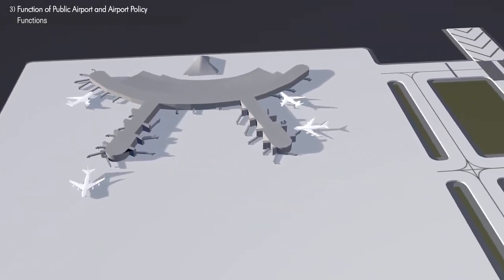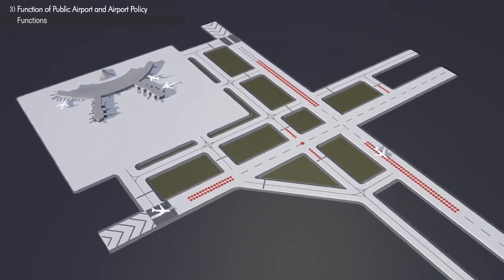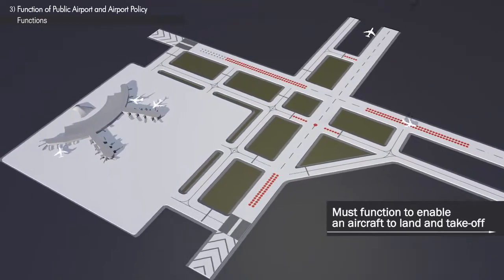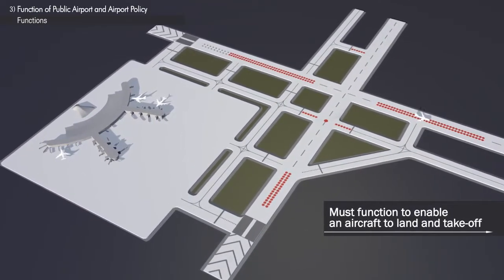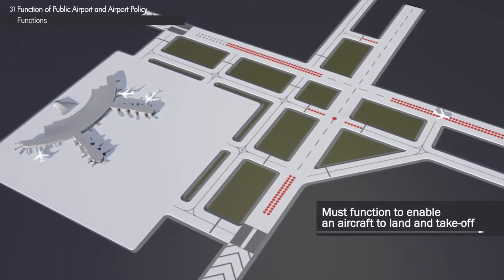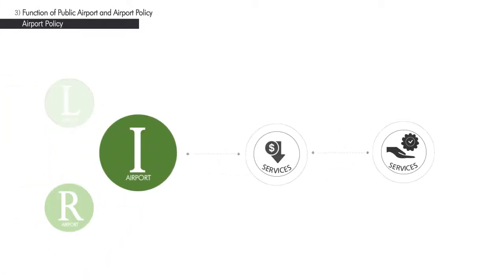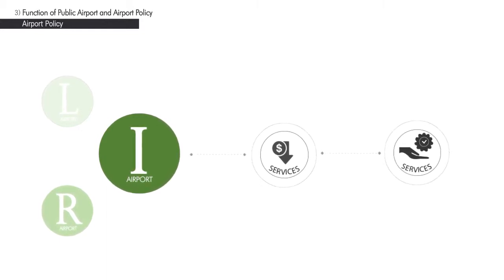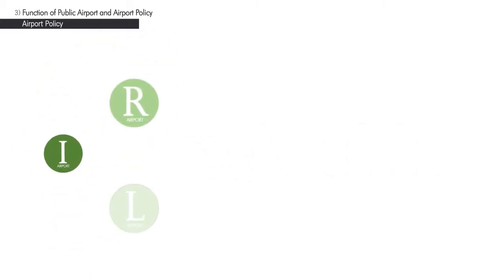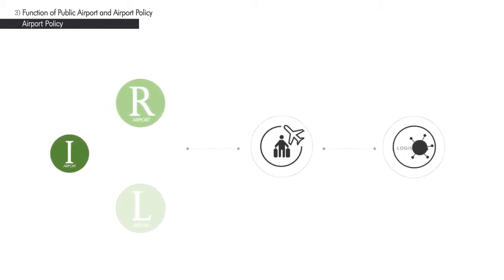The function of a public airport is to be an intermediate or terminal operating point of aircraft. As a basic requirement, public airports must have the functionality to enable aircraft landing and takeoff. Accordingly, different policies are applied to different airport categories. While passenger transport or logistical hub strategies may be applied to gateway international airports, policies for regional or local airports may adopt strategies focused on low-cost services or specialized services for the region it serves.